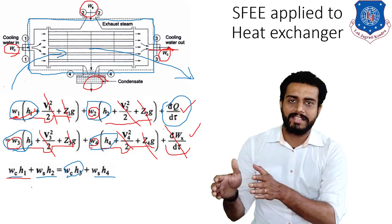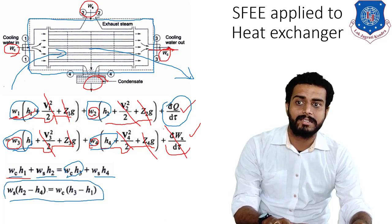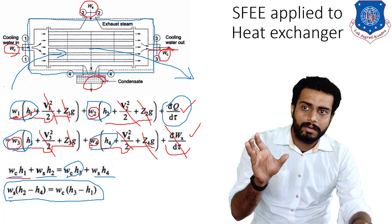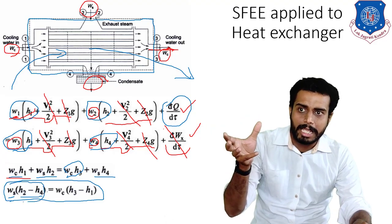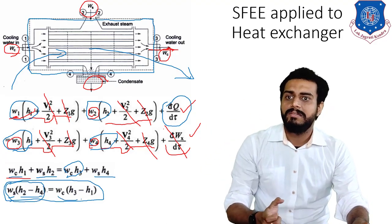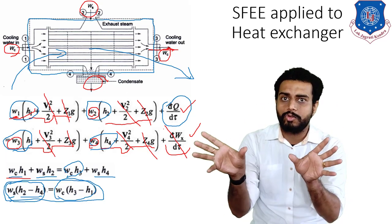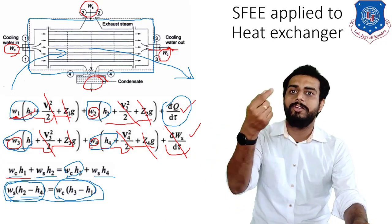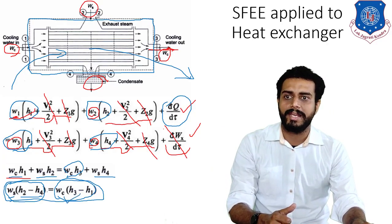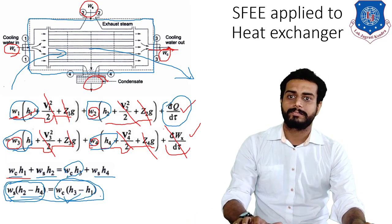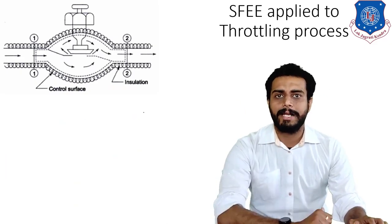Taking ṁc and ṁs as common, the final equation becomes: ṁs(H2 − H4) = ṁc(H3 − H1). This means the energy rejected by the steam equals the energy gained by the water — ideally these should be equal. This is how SFEE is applied to a heat exchanger.